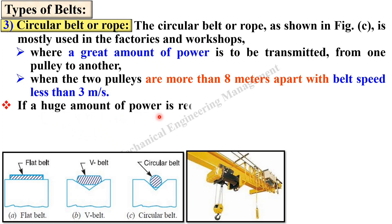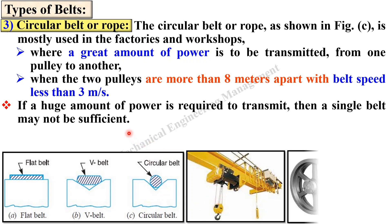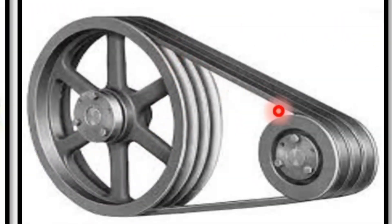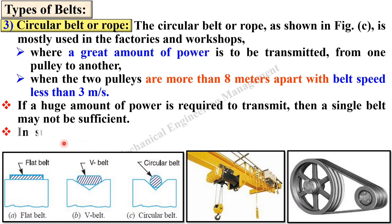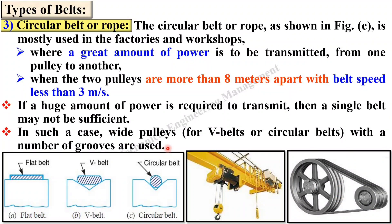If a huge amount of power is required to transmit, a single belt may not be sufficient. So if you want to transmit a huge amount, a single rope is not enough — at that time you can use multiple ropes. In such a case, wide pulleys for V belt or circular belts with a number of grooves are used.